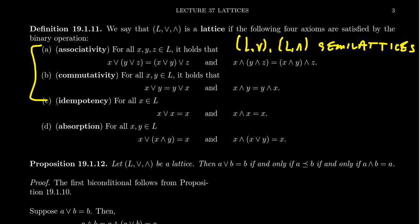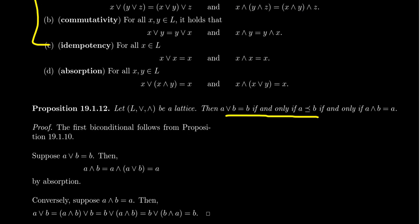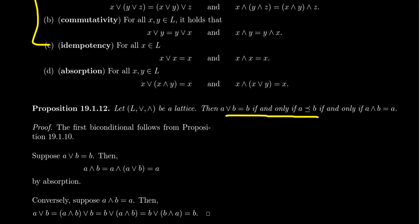This proposition captures the idea of orderings. Given a lattice L with join and meet, the following three things are equivalent: A join B equals B, if and only if A is less than or equal to B, if and only if A meet B equals A. This proposition establishes that A join B is the least upper bound of A and B, and A meet B is the greatest lower bound. The middle equivalence with A ≤ B is the definition we already took care of when we introduced semi-lattices — see Proposition 19.1.10 from this lecture series.